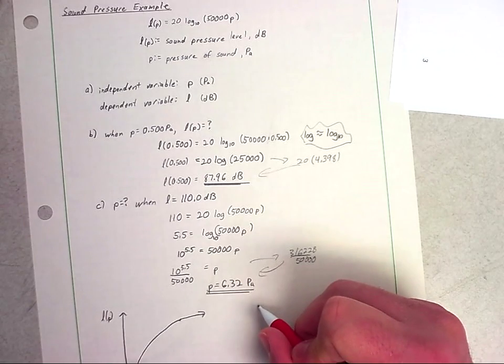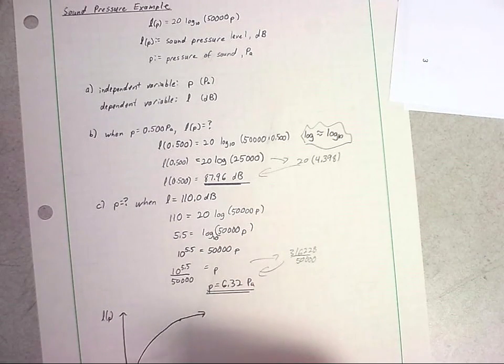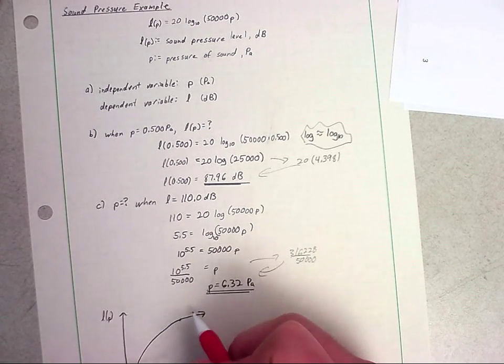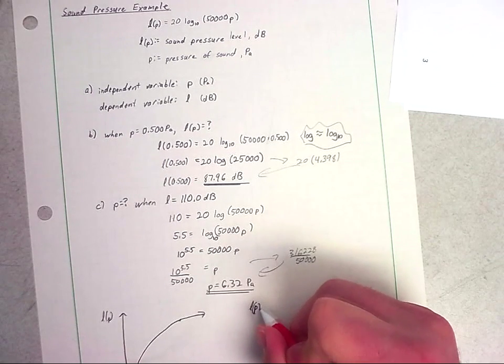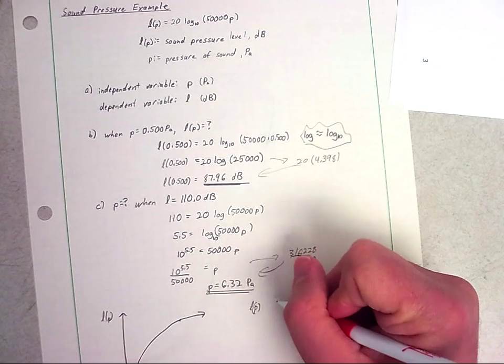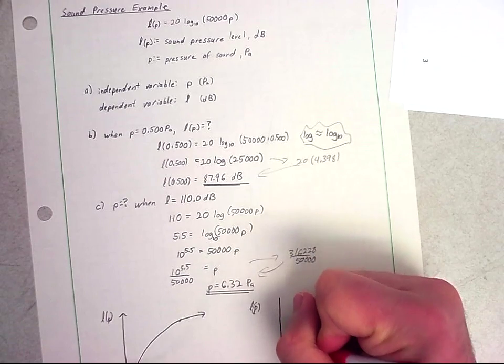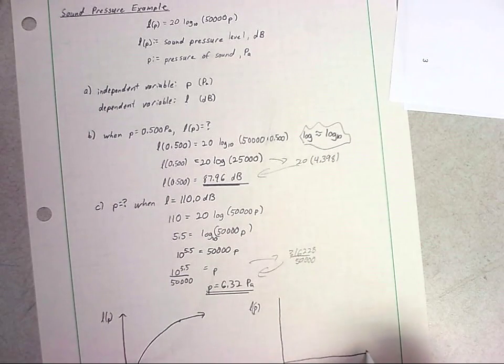So what you would often see people do instead of trying to plot this, because once you get out to this area, it becomes really tough to tell differences. You'll see graphs that use a logarithmic scale to plot the graph.